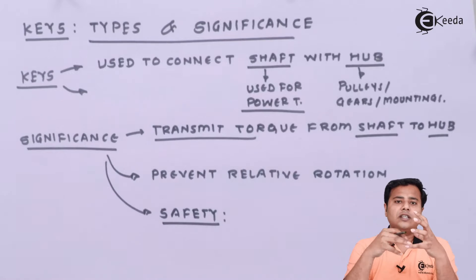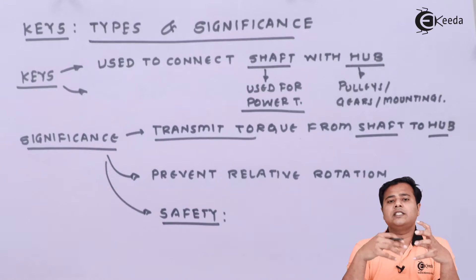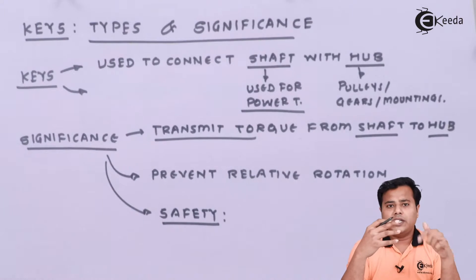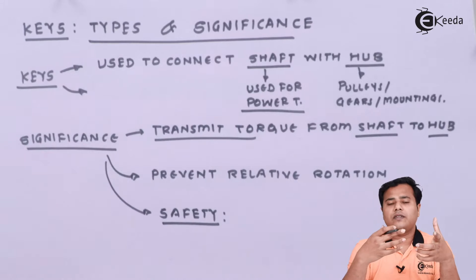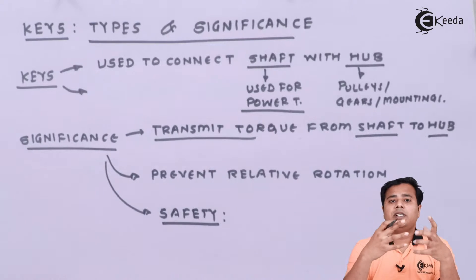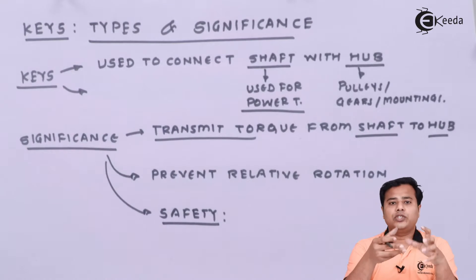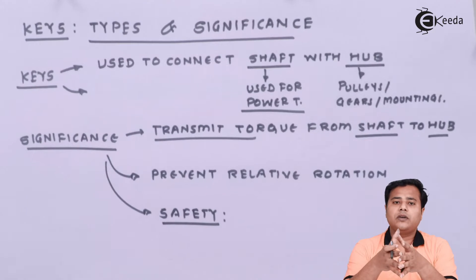So when the actual motion starts, shaft actually rotates and it is supposed to rotate the other mountings along with the shaft. If the key is not present, they will always have some relative motion between them. That is why it will be the loss of power.